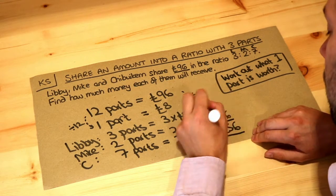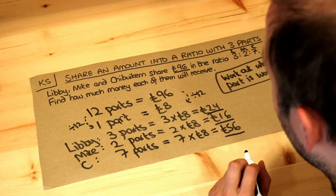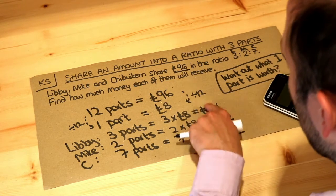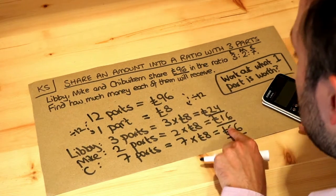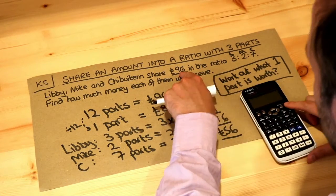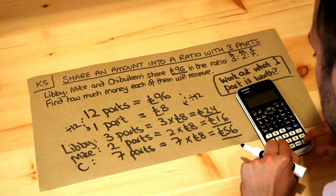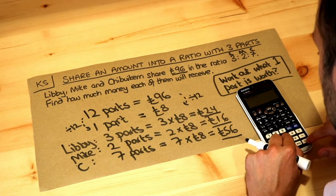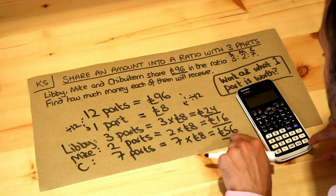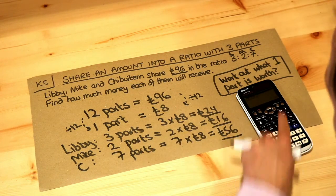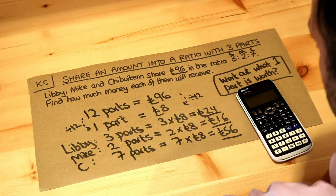Those are the final amounts. If we check whether these add up to £96 — the amount they were sharing — 24 plus 16 plus 56 is 96, which is the correct total amount.